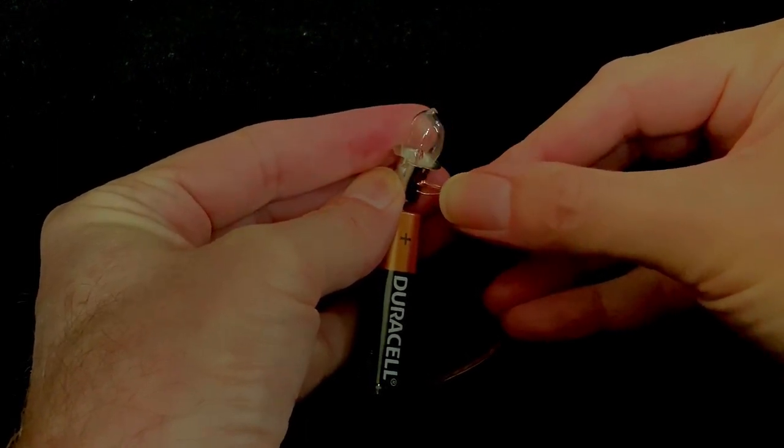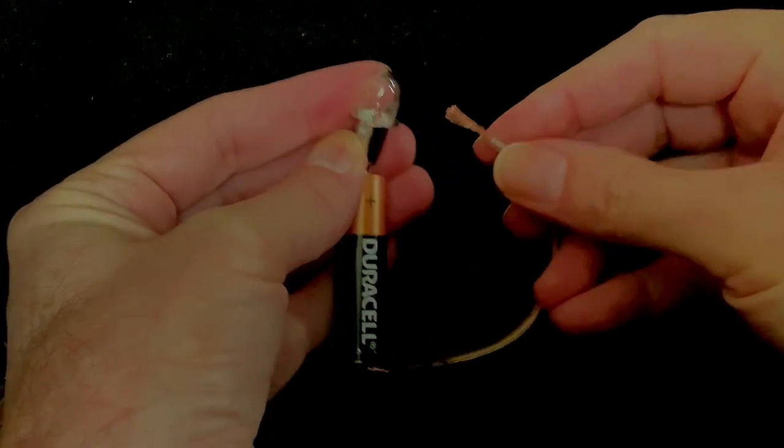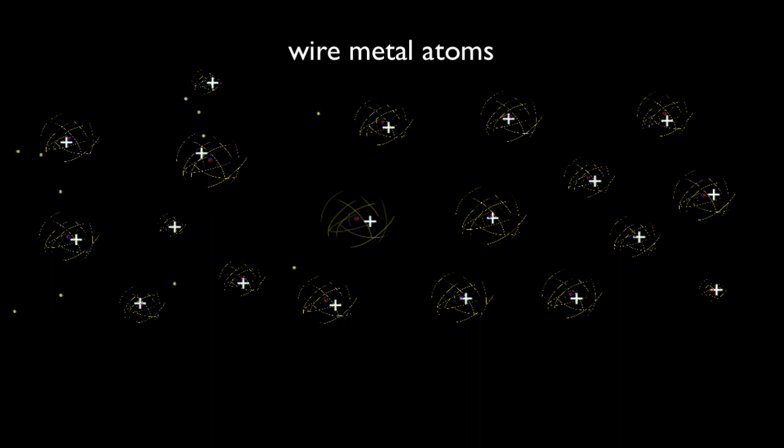When we say charge flows in a metal wire, we're talking about the movement of the metal's loose-conducting electrons. But get this, the speed at which those loose electrons travel down the wire is actually quite slow. They'll take about three hours to traverse a one-meter distance. A snail can travel faster than that.